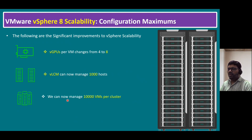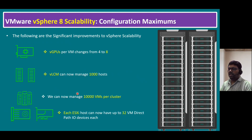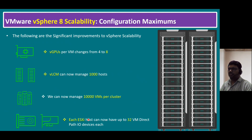Another key point: we can now manage 10,000 virtual machines per cluster when upgrading to vSphere 8. Last but not least, each ESXi host in version 8 can now have up to 32 virtual machine direct path IO devices. Direct path IO devices are connected through PCI passthrough — any device connected via PCI (Peripheral Component Interconnect) on the motherboard can be passed through to virtual machines. This device count also increases to 32 virtual machine direct path IO devices per ESXi host.